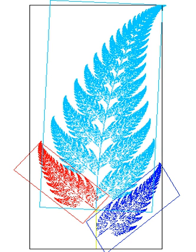In three dimensions, self-avoiding approximation curves can even contain knots. Approximation curves remain within a bounded portion of n-dimensional space, but their lengths increase without bound. Space-filling curves are special cases of fractal constructions. No differentiable space-filling curve can exist — roughly speaking, differentiability puts a bound on how fast the curve can turn.